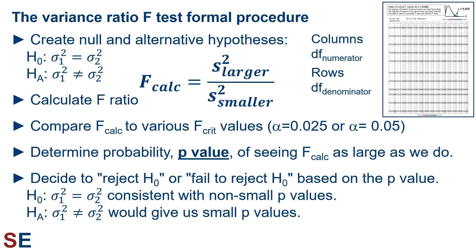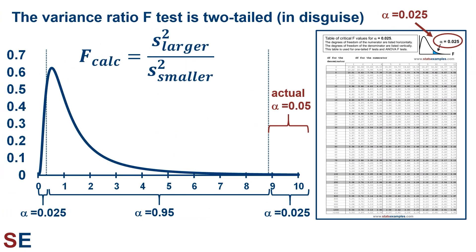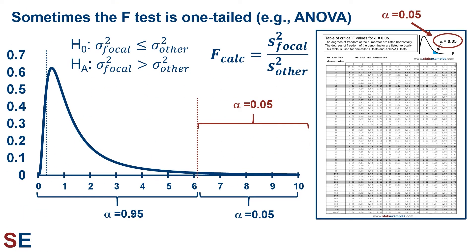We should always keep in mind that we may be making a type 1 or type 2 error. The variance ratio F-test is a two-tailed test, even though we're only looking at one tail of the probability distribution in our statistical tables. That's because instead of looking at both ends of the distribution, we rearranged the equation to force our F-ratio into the higher end. Sometimes the F-test is one-tailed, for example in the ANOVA technique, when our question is whether the variance of our focal population is larger than the variance of the other. In that case, we always put the sample variance for the focal population in the numerator and compare the F-calculated value to the right end of the F-distribution using the table for alpha equals 0.05 directly.